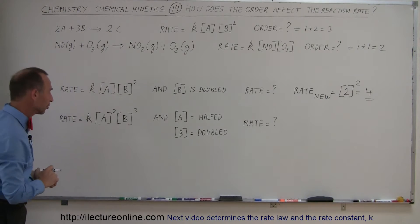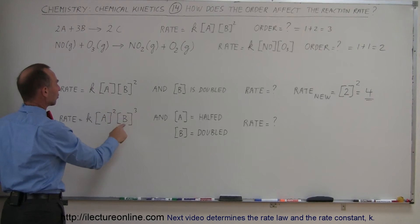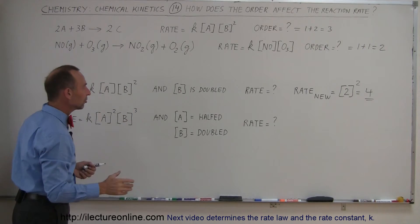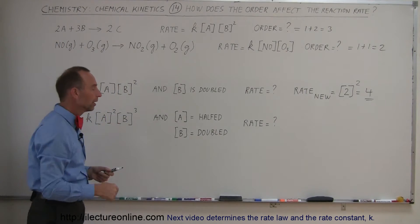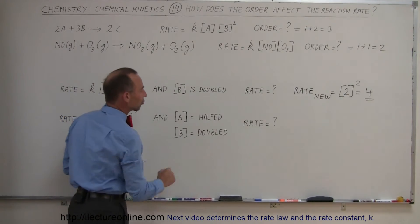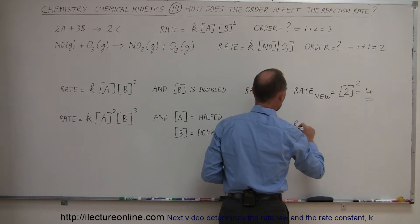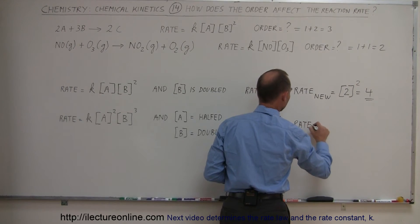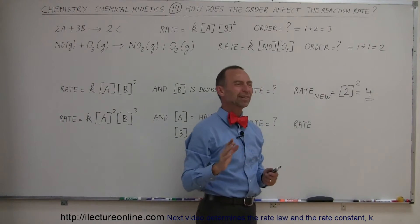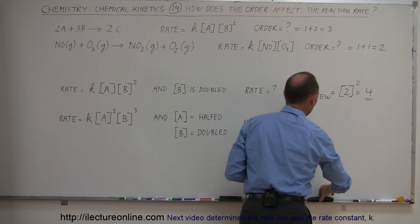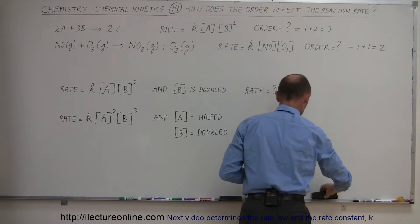Here's the second reaction, in this case, the rate is equal to K times the concentration of A squared and the concentration of B cubed. In this case, we're going to half the concentration of A, so we only have half as much, and for B we're going to double the concentration of B, what is now the new rate? Well, in this case, the rate new, and actually, I may have misled you a little bit, this is a reference to the number of times it's the old rate, so what I'm going to do is I'm going to rewrite this, so I don't confuse you.